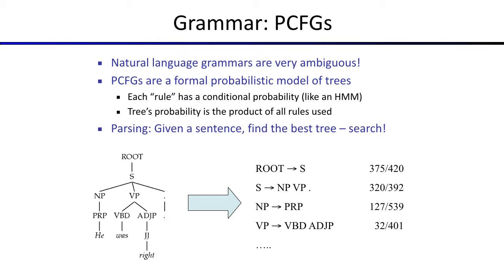What does the state space for this search problem look like? Important thing to remember for the final: when we ask what the state space looks like, we don't just want to know how big it is, but what you're actually writing down. The words are fixed — given input like 'Hershey bars protest,' they don't change. What we're trying to discover is the tree structure on top of those words.